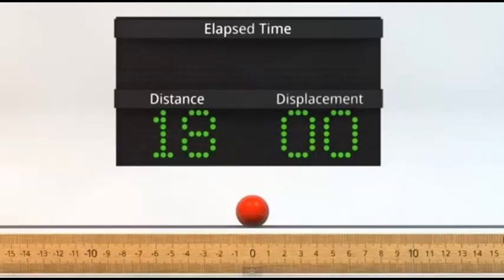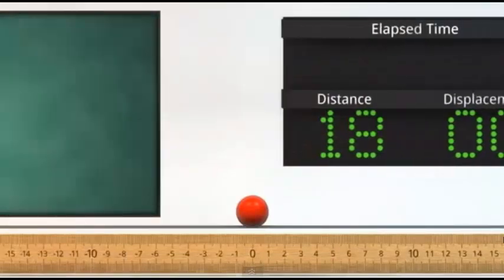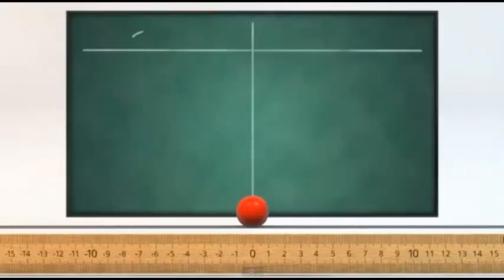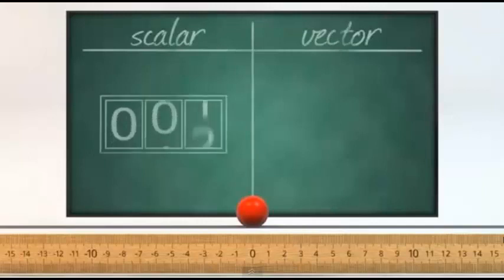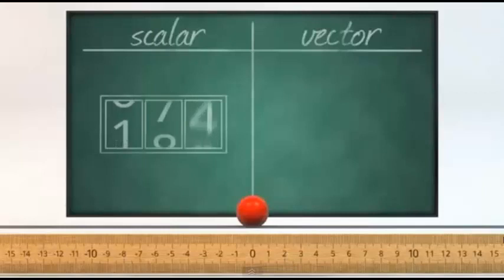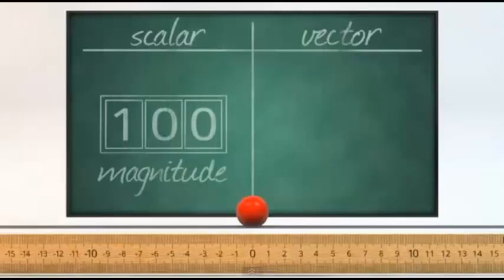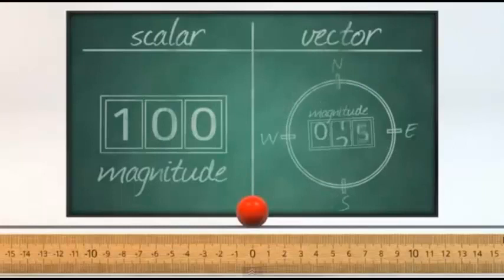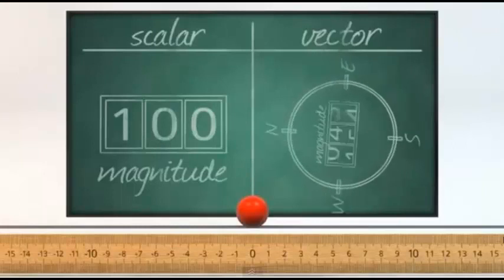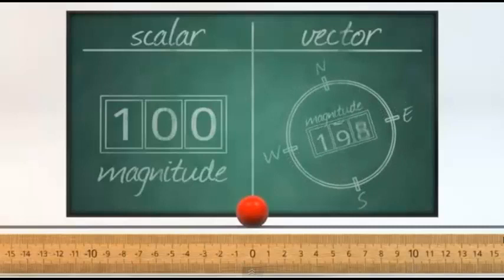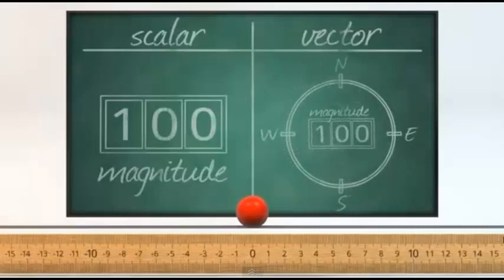The differences between displacement and distance are so important that scientists came up with two words to describe these differences: Scalar and Vector. Distance is a scalar because it is just a number, and it only tells us how far the ball has gone without any info on which direction it moved in. A scalar is just a magnitude. Displacement is a vector because we can tell the difference between when the ball is moved left or right.